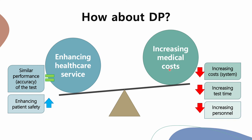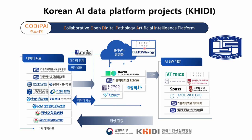Last year, the Korea Health Industry Development Institute and the Ministry of Health and Welfare funded a new project for digital pathology and artificial intelligence platforms. The total funding was $500 million over the next five years to three research consortiums, including the Catholic University of Korea, Yonsei University Hospitals, and Samsung Medical Center. Each consortium includes 10 to 15 hospitals and 10 bio companies. This is a schematic illustration of the CODI-PAI consortium led by the Catholic University of Korea.